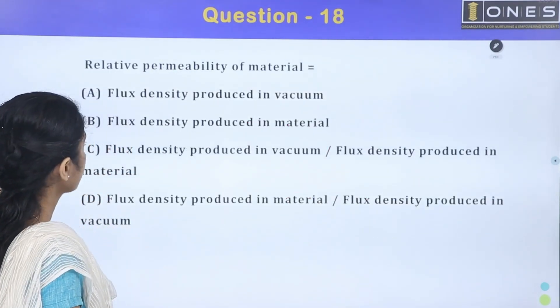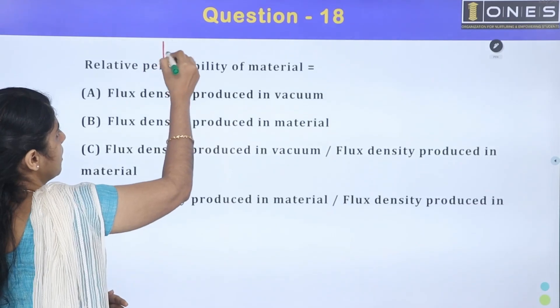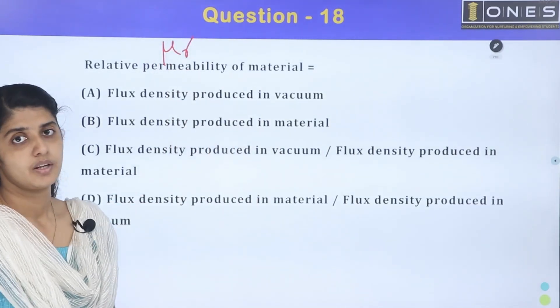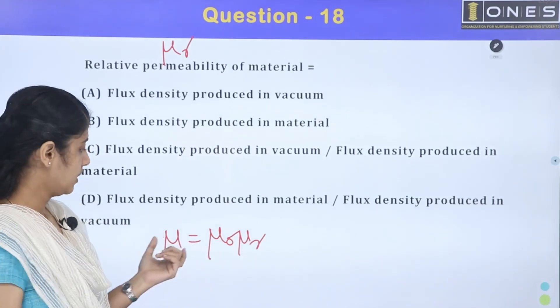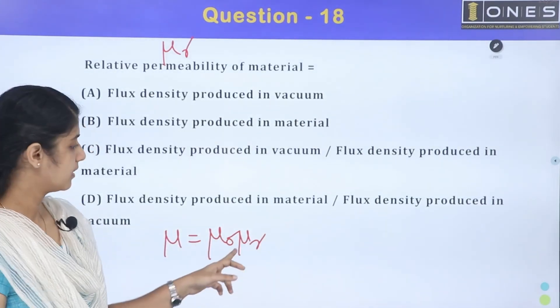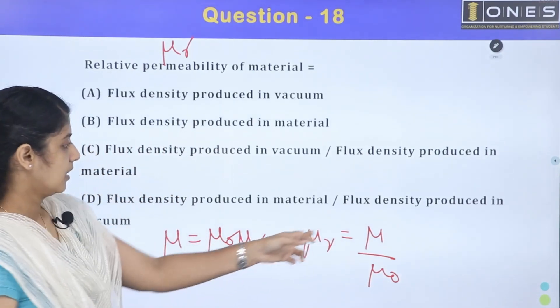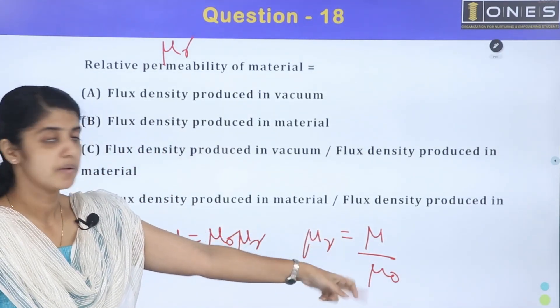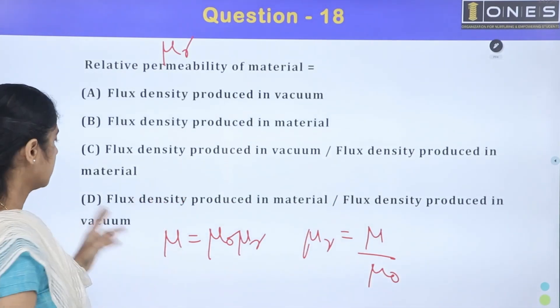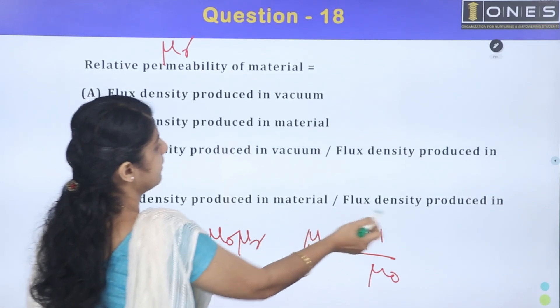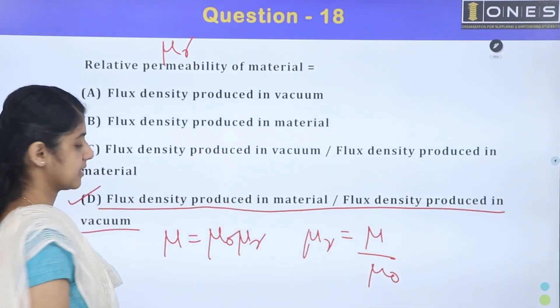Next question. Relative permeability of material equal to. Permeability is mu. We will say mu is equal to mu zero mu r. There is a material, mu zero mu r. Relative permeability, mu r is equal to mu divided by mu zero. So the value is the permeability of material divided by the permeability of vacuum. What options? Flux density produced in vacuum, flux density produced in material. Flux density in material divided by flux density produced in vacuum. So option D is the correct answer.